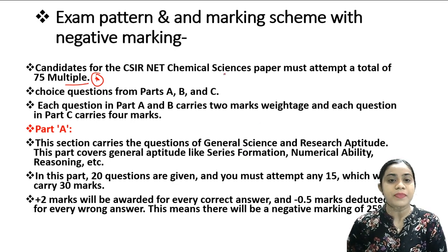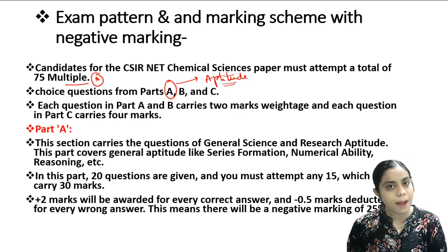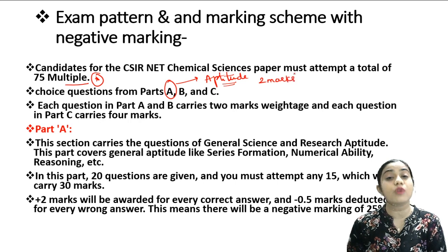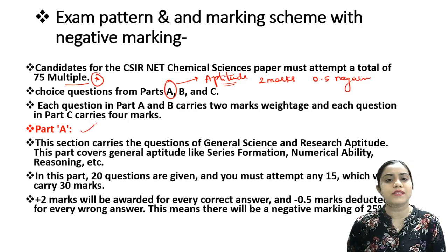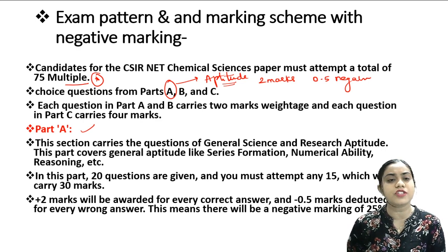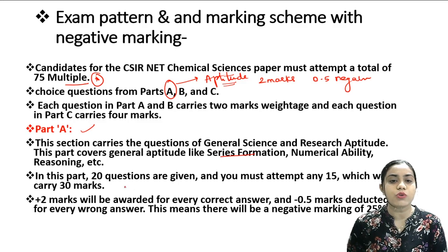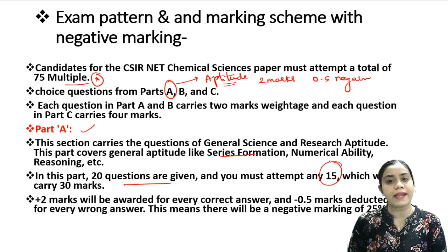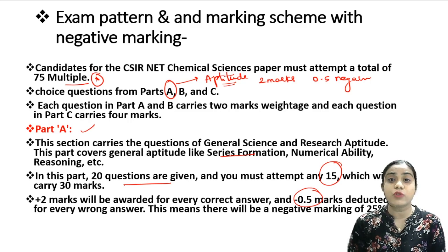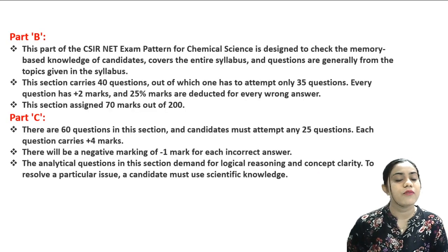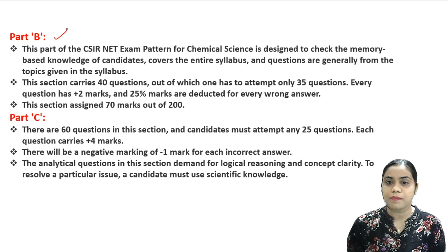Part A includes only aptitude questions covering general sciences, general aptitude, research aptitude — like series formation, numerical ability, reasoning, etc. In this part, 20 questions are given and you have to attempt only any 15 questions, which carry 30 marks total — each question carries two marks. There is also negative marking in Part A of minus 0.5 marks, so you should only choose questions you are very confident about.